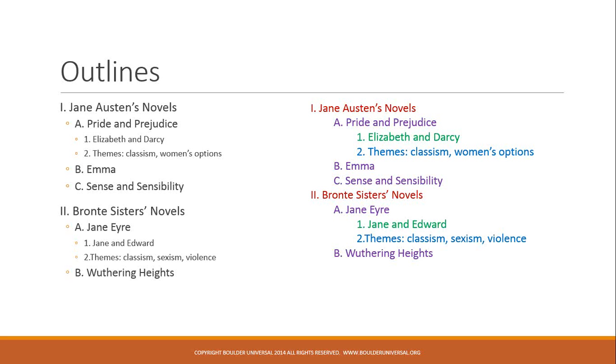You'll notice under number two here, under the Bronte sister novels, we have the two example novels, Jane Eyre and Wuthering Heights. And under Jane Eyre, you'll see the indentations for items number one and two, where Jane and Edward are the two main characters, and then three themes that are covered within this novel, which are classism, sexism, and violence.